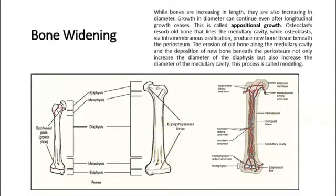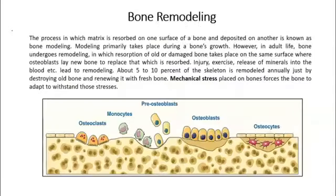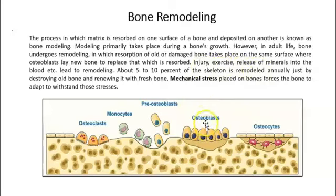The next topic is bone remodeling, which is based on the stress that bones undergo. The more activity a bone experiences, the more bone deposition occurs. That is why bones in the legs are thicker and wider than those in the arms — because constant walking stimulates more bone deposition in the legs.